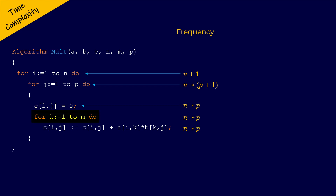Then we have another statement inside the for loop for J, which is a for loop for K, which itself will execute for M plus 1 times. So actually the for loop for K will execute for N multiplied by P multiplied by M plus 1 times. The statement inside the for loop of K will execute for M times. But since this statement is inside the for loop of K, the for loop for J, as well as the for loop for I, the statement which computes C of I comma J will actually execute for N multiplied by P multiplied by M times.